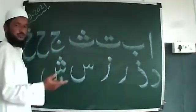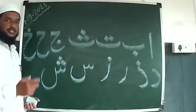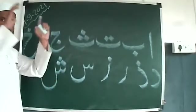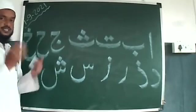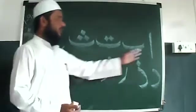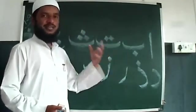Shin for Shams — the sun. Mashallah! So: Alif for Allah — Allah is one. Ba for Bismillah. Let's review the Arabic letters.